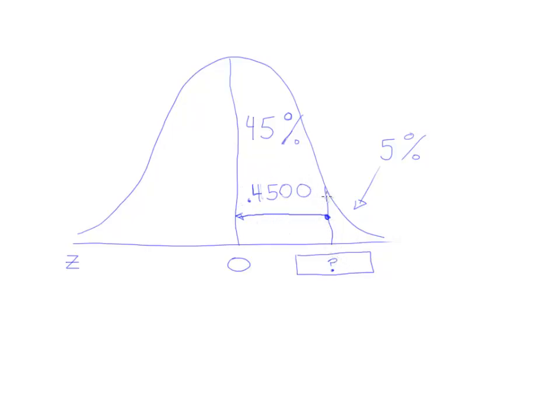So what we have to do here is look up 4,500 on the z-chart to find the closest z-score. Something unique happens in this problem though, that doesn't usually happen in these kinds of problems. So let's take a look at that.